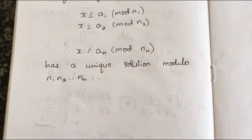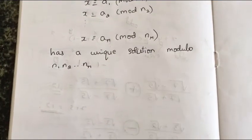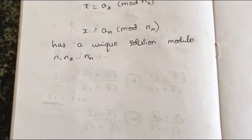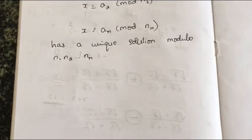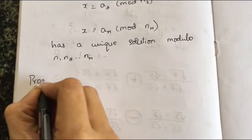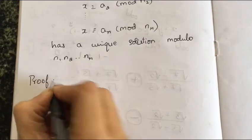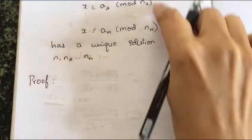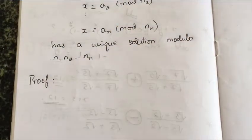To prove this, we just have to construct the solution first and then prove that it is unique. So let us go about constructing the solution for the system of linear congruences.